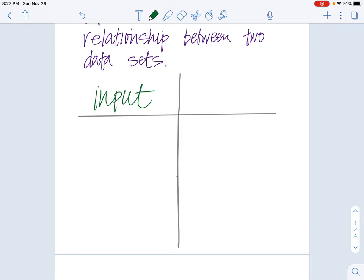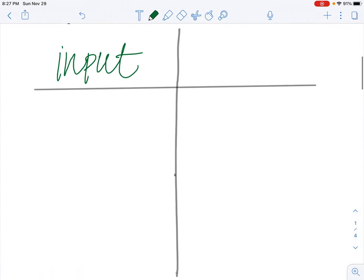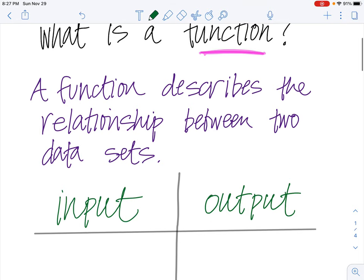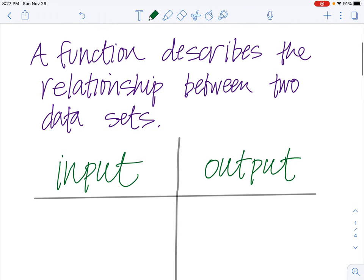input. Every function has a set of data that is the input, and then the output. What goes into the function and what comes out of the function. Again, this is describing a relationship between the input and the output.